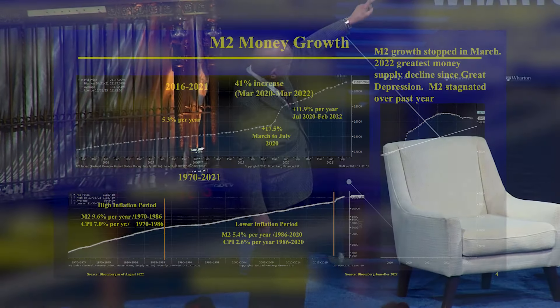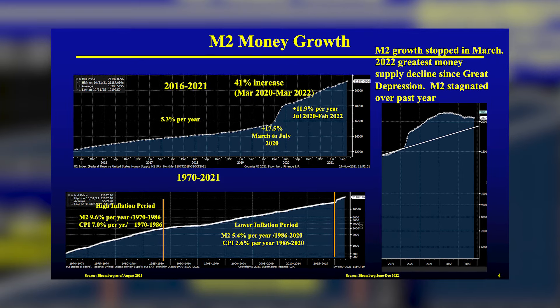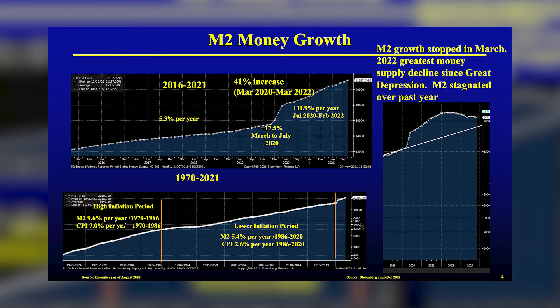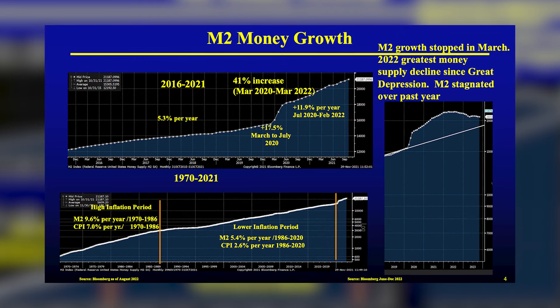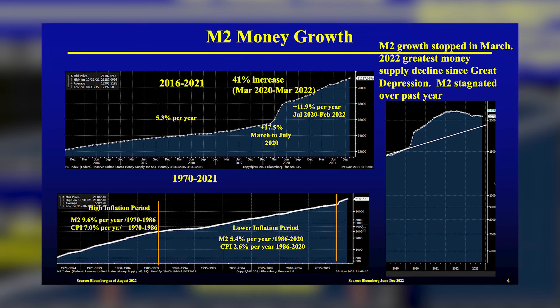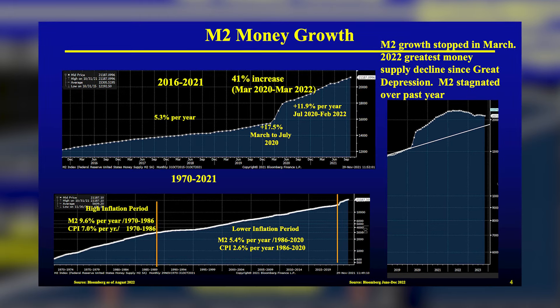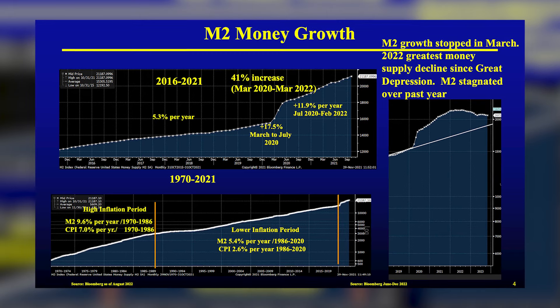Then they slammed on the brake after soaring the money supply. We never had to have so much money. In the high inflation period of 1970 to 1986, we increased money at 9.6% a year and had inflation of 7% — the quantity theory says the difference should be real growth of about 2-2.5% a year, which works out perfectly. Then Volcker said enough — we're controlling the money supply. For 34 years, we raised the money supply at 5.4% and achieved 2.5% inflation. And then it ratcheted up again.